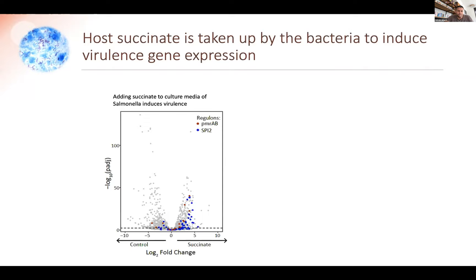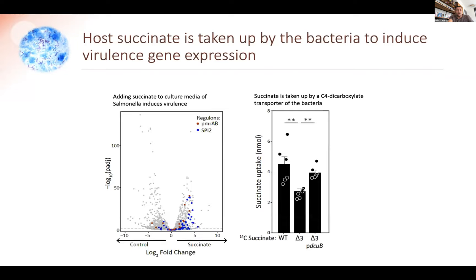To go deeper into the mechanism, we wanted to understand whether this is through sensing of succinate on the bacterial cell wall, or whether succinate needs to go into the bacteria. What Gili found is that if you look at succinate uptake by the bacteria, there is a transporter important for this uptake — DCUB, a C4-dicarboxylate transporter — that is important for the uptake of succinate and the induction of virulence genes.